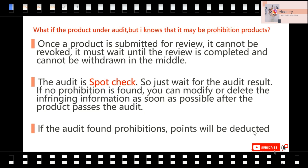The second rule: the audit is a spot check. That means not all products are checked by AliExpress. So even when a product is posted onto the platform, that does not mean it is not a prohibited product, because it is a spot check. If it is really prohibited, later the platform will check it out, your product will be deleted, and your account will have points deducted. If the audit finds your product is prohibited, your score will be deducted.